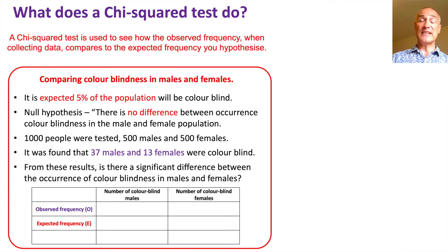First thing it's helpful to put a table together like this where you've got the number of colorblind males, the number of colorblind females, and you've got the observed frequency and expected frequency. Our observed frequencies: 37 males and 13 females. Now we have to calculate our expected frequency. Our expected frequency was 5%, so we have 500 males, so 5% of 500 is 500 times 0.05, so that's 25 males we'd expect to have color blindness. The percentage is the same for both our expected frequency because we're saying there's no difference. So we had 500 females, so it'd be 25 as well for females.